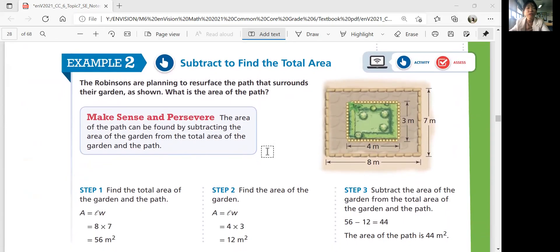Next page. Example two, subtract to find the total area. The Robinsons are planning to resurface the path that surrounds their garden as shown. What is the area of the path? We've got a garden over here. And then we're going to resurface, they're going to resurface the path that surrounds their garden. What's the area of this path that surrounds the garden? So you don't want the area of the garden. So one way, you can find the total area for the rectangle and then subtract the area of the garden.